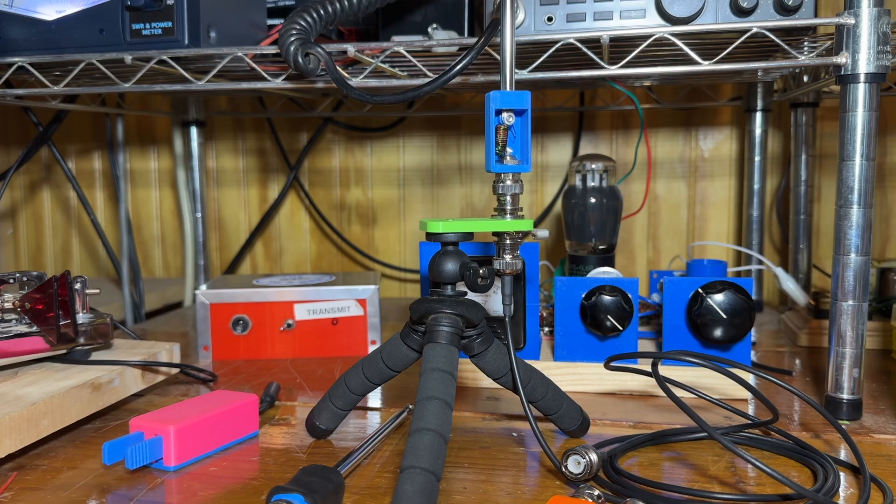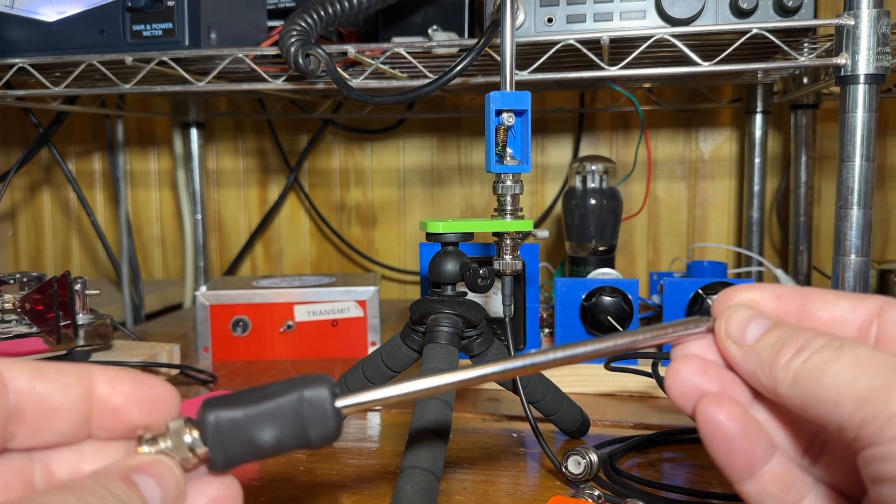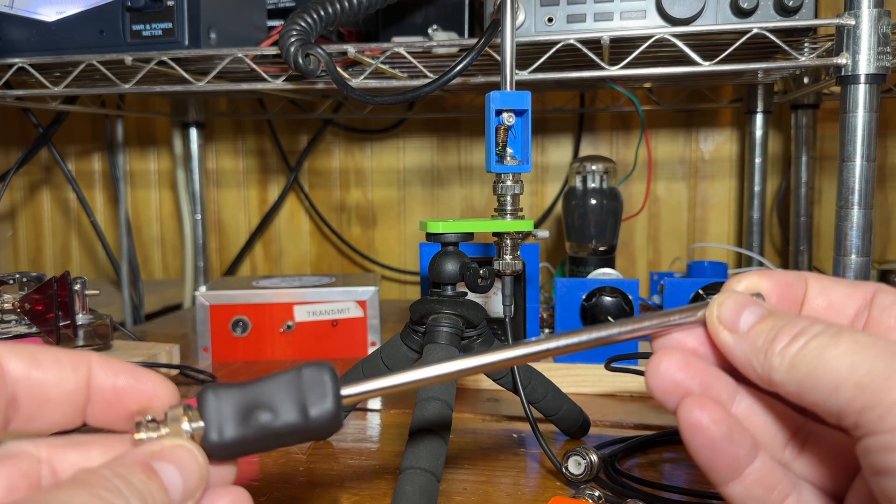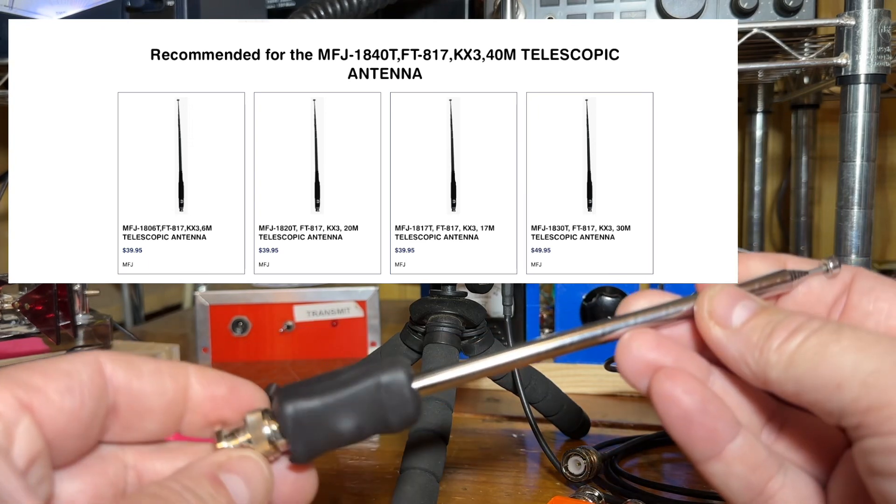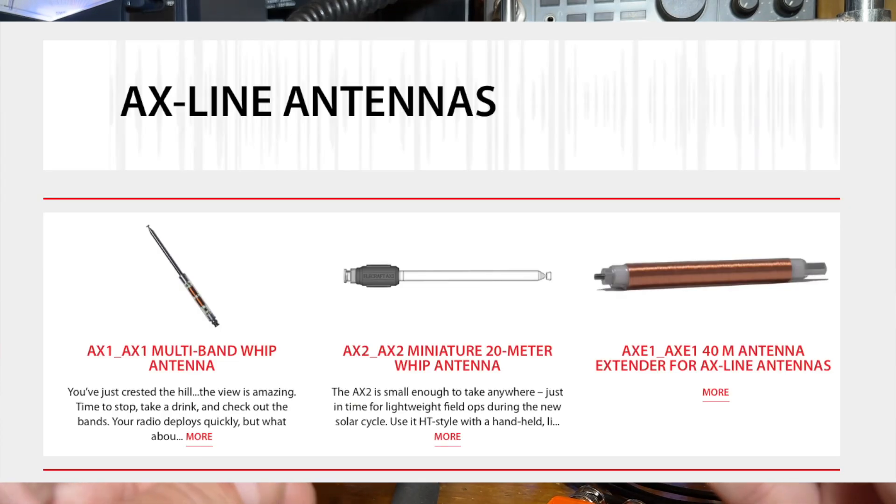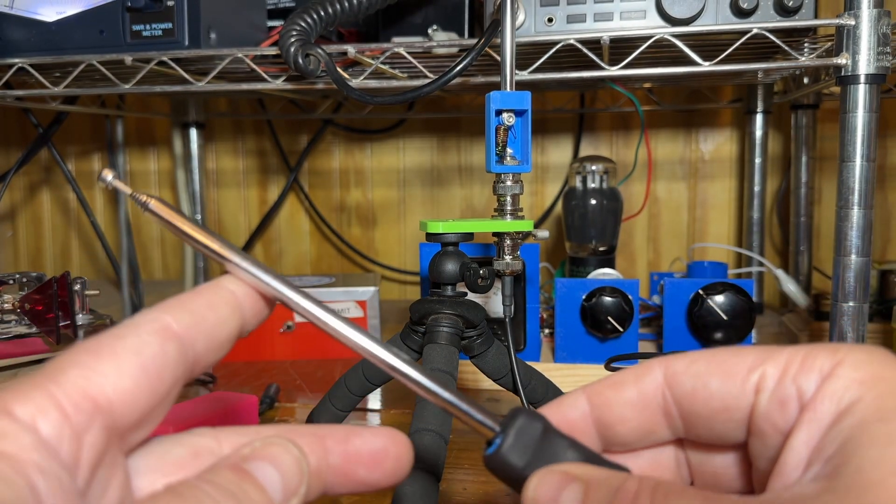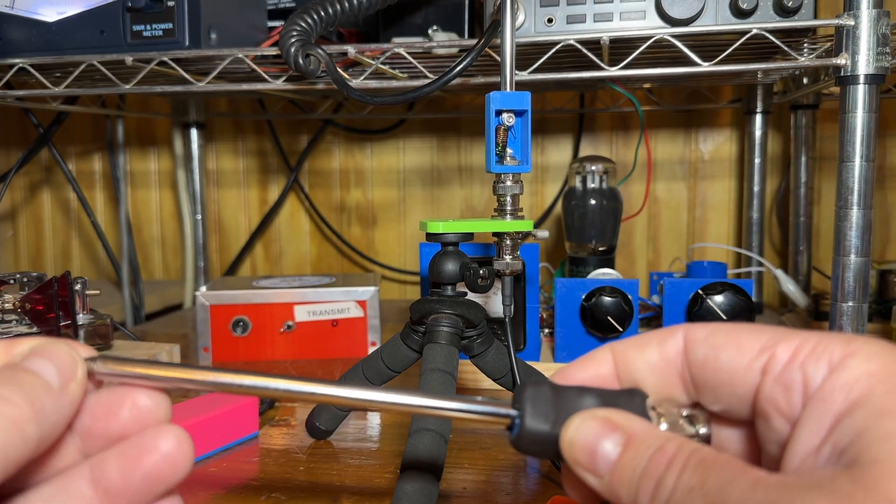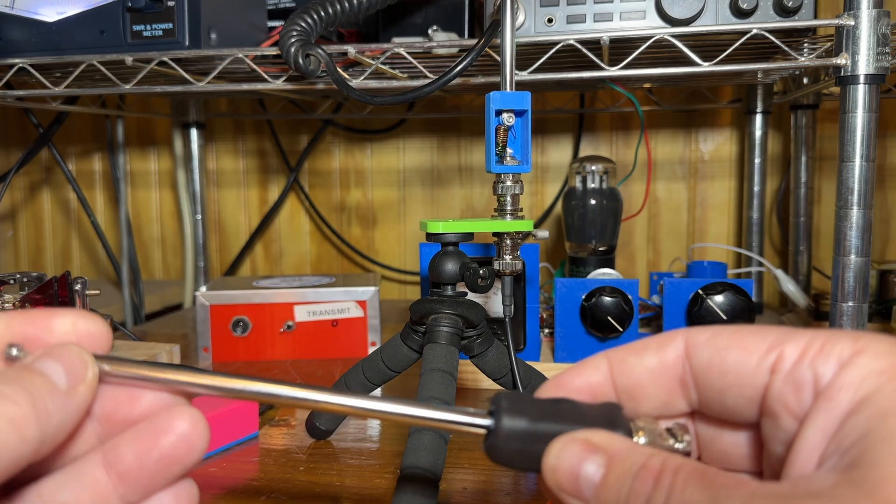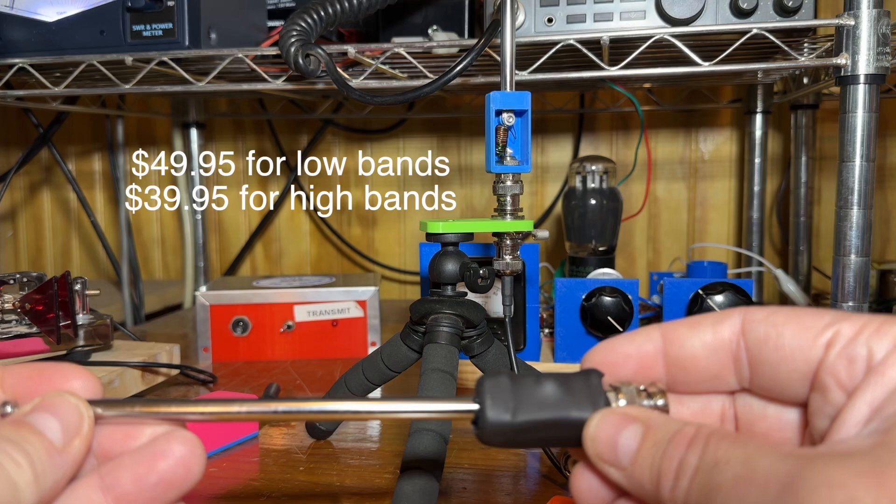This is an antenna very similar to the MFJ 1840 single-band antennas. Also, Lcraft has their AX1 multi-band antenna. Well, I really didn't want to pay the price of those antennas. The Lcraft is $109 for the AX1 and then another $60 for the 40-meter extension. The MFJ single-band ones are $49.95 each.